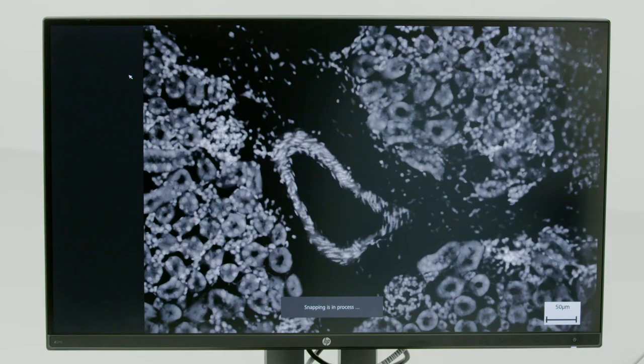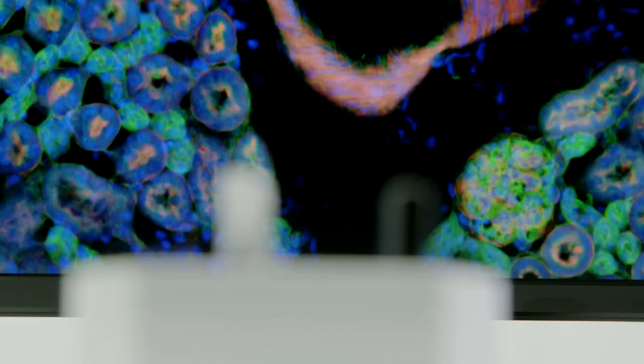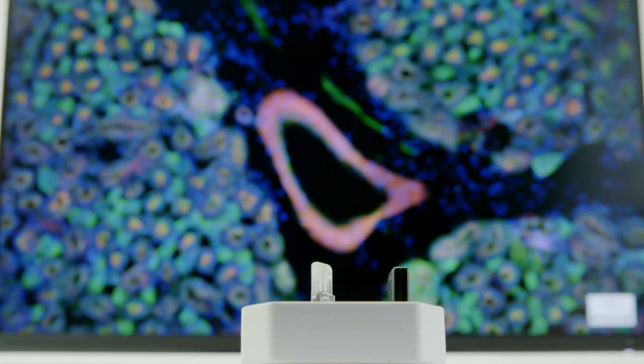And there you have it. Your overlaid multi-channel fluorescent image, including scale bar, is now ready and waiting on your USB stick. For further information, visit our website.